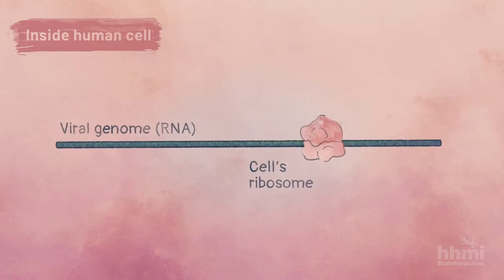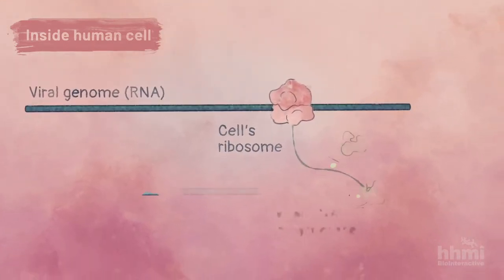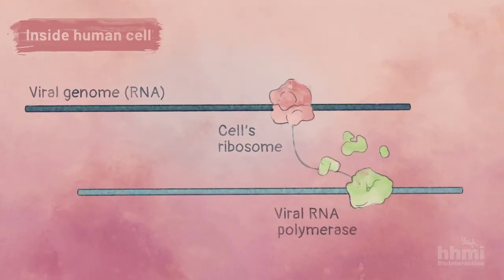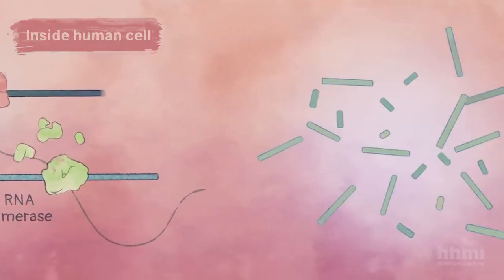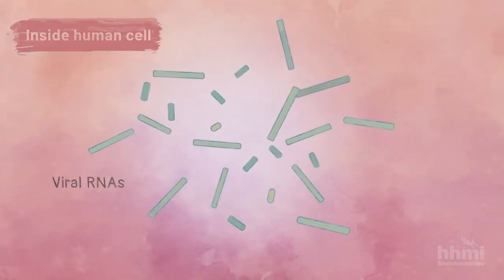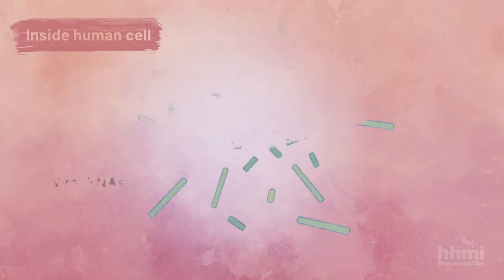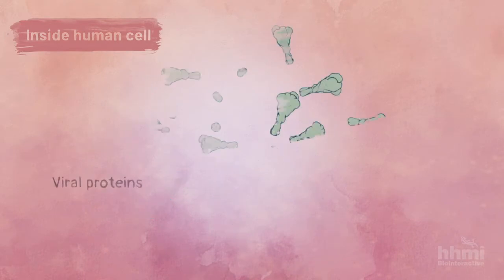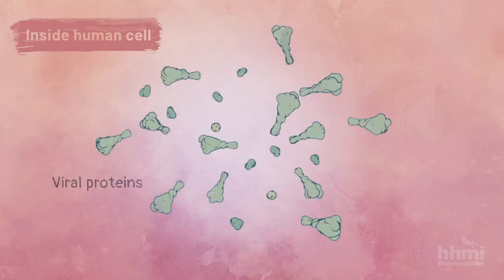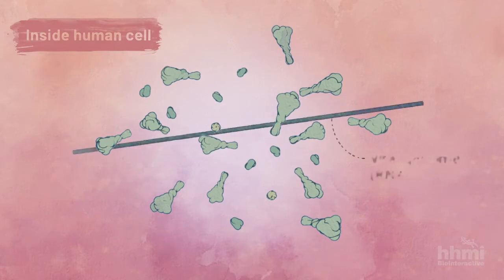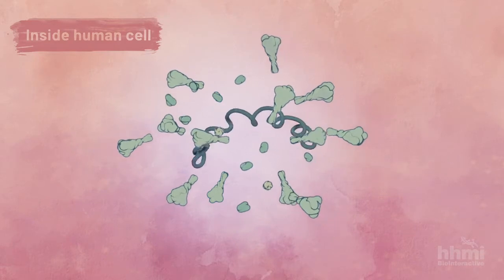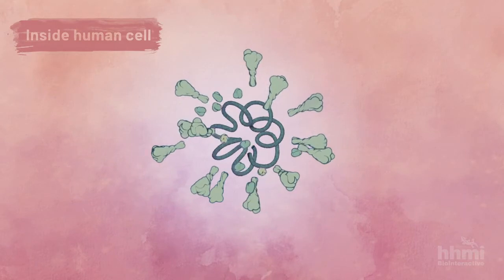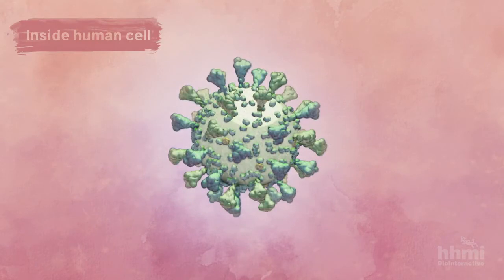The cell's ribosomes translate the virus's RNA into proteins, including viral RNA polymerase. The RNA polymerase transcribes the virus's RNA, making more RNA copies that are translated into proteins. It also makes more copies of the virus's whole genome. The new viral genome and proteins combine to make a new virus that is packaged into an envelope formed from the cell's membranes.